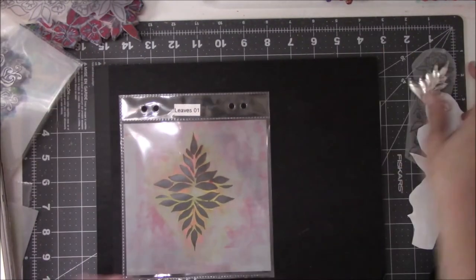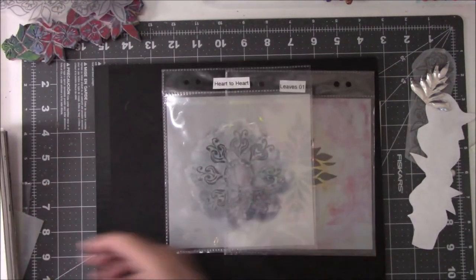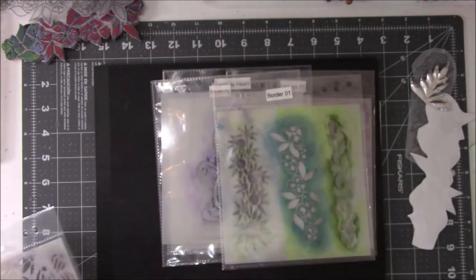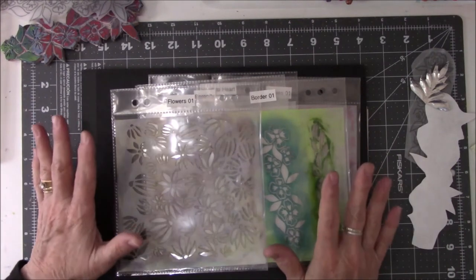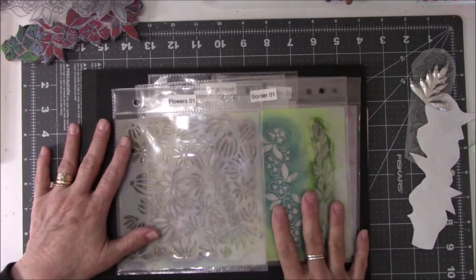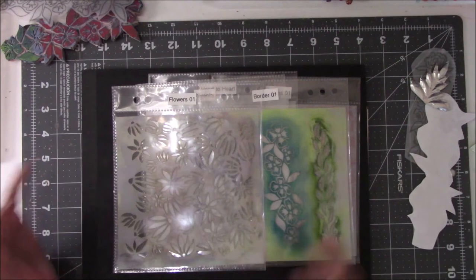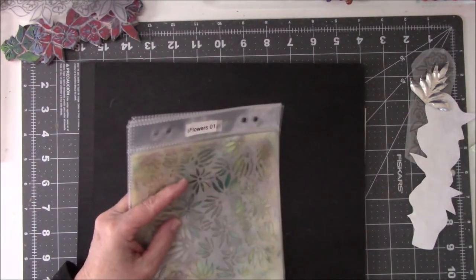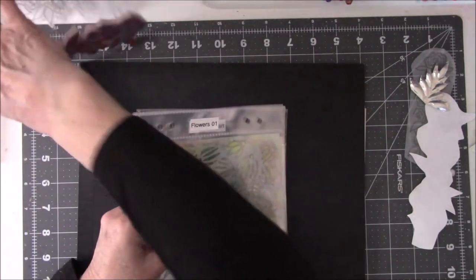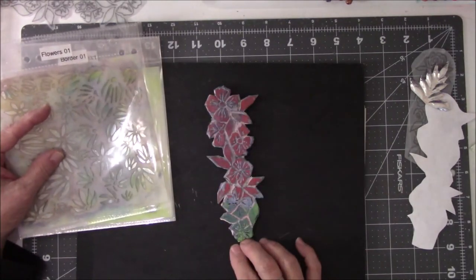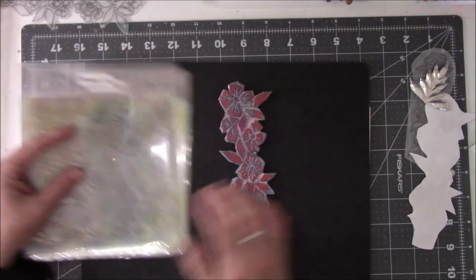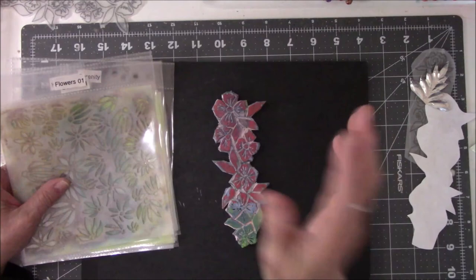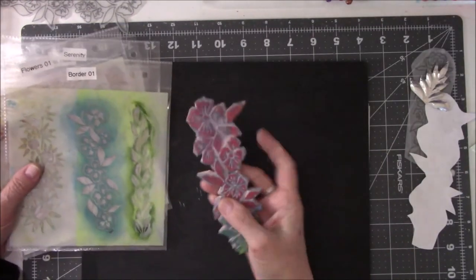Okay, so here are the five stencils. Leaves 01, Heart to Heart, the Serenity stencil, the Borders 01, and the Flowers 01. If you're interested in purchasing the stencils, you can go to my Etsy store, Messy Table Studio, or you can go to What If NC. You can order it from either one of us. You will get your stencils. Thank you very much for watching. When I come out with some new stencils, I'll come back and I'll do some demonstrations so that you can see how I use my stencils.